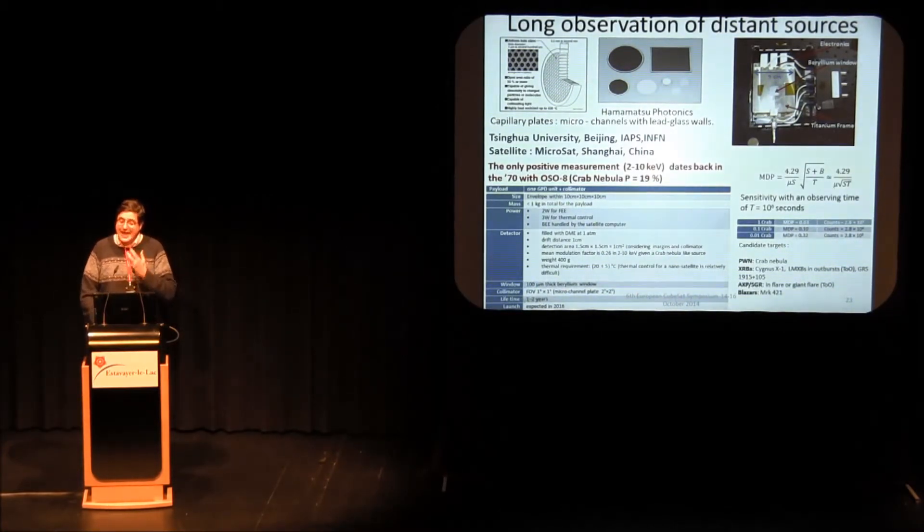As a last application, I want to speak about the fact that if we cover the first gas pixel detector that I showed before with the helium-DME mixture, working between 2 and 8 keV, with capillary plates and microchannels with lead glass walls that allow to cut out the cosmic X-ray background, one can use this gas pixel detector to make polarimetry of distant sources with integration times that must become of the order of 10 to the 6 seconds, that means 10 days or about a month. With this gas pixel detector that has been developed for CubeSat application in China by Tsinghua University, it's actually possible to arrive at minimum detectable polarization for different classes of celestial sources that are very interesting.